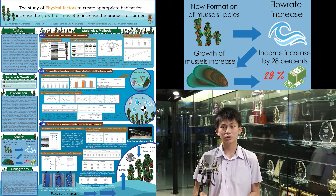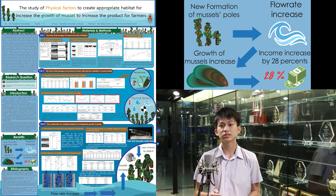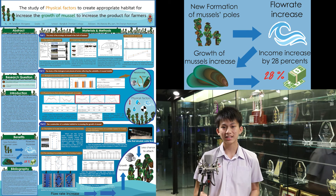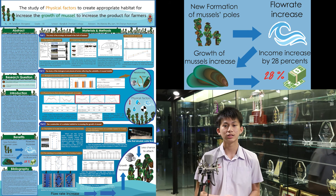In conclusion, an appropriate way of setting the formation of mussel habitat can affect the chlorophyll level, which in turn results in an increased number of mussel productivity. Formation D that I have created can increase the productivity of mussels by up to 28%.